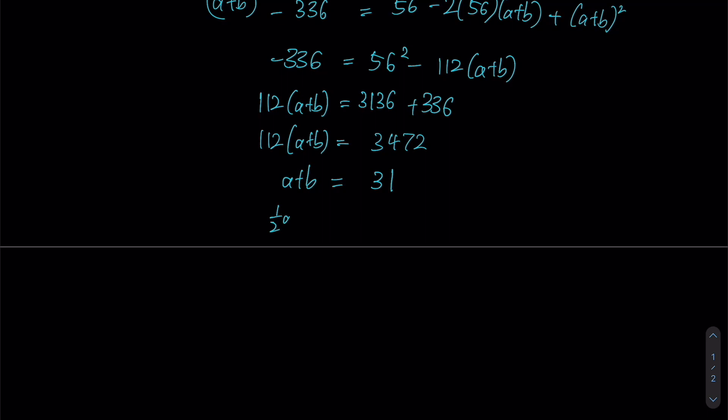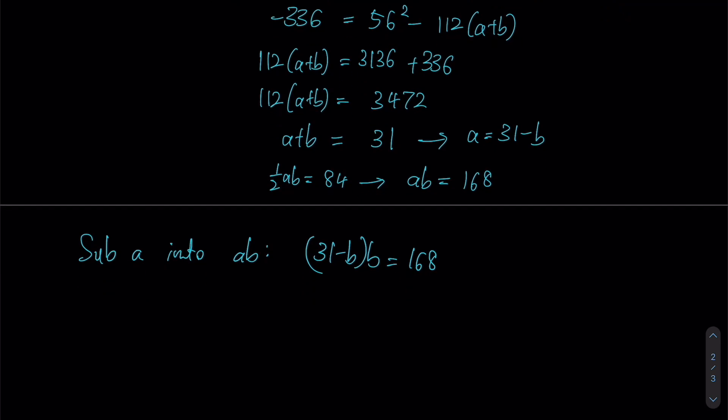Recalling that since our half AB is equal to 84 from the area, AB is said to be 168. So actually, we can sub A plus B into AB. But first, we have to make either A or B the subject of the formula. So let's say A is 31 minus B, then we can sub A into AB. So instead of writing it as A, we replace it with 31 minus B, multiplied by B to give us 168. And you expand this out, then you try to put it into a form of a quadratic equation. And this is what you'll get.